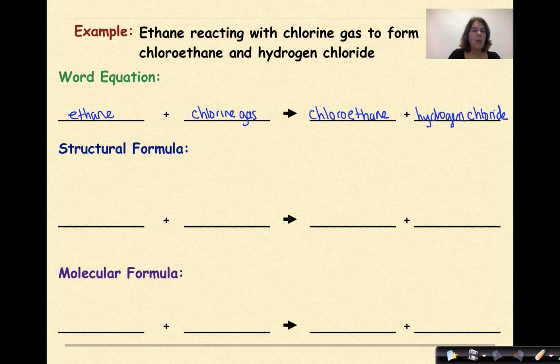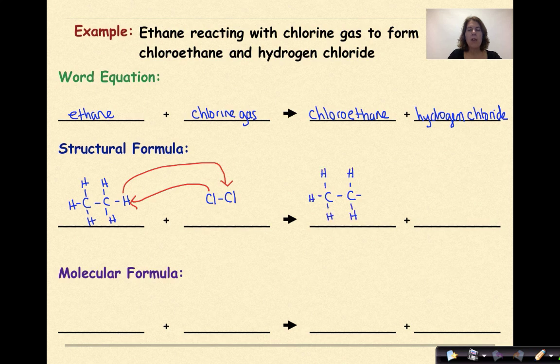For a structural formula, we know ethane is two carbons with hydrogen surrounding it on all sides. Chlorine gas is a diatomic. And as a result of this reaction, one of the chlorines is going to come out and attack one of the hydrogens. And that hydrogen is going to come back and hook up with one of the chlorines. So we'll still have two carbons in our original hydrogens. Now we'll have a chlorine attached to this molecule. And our other product will be HCl.